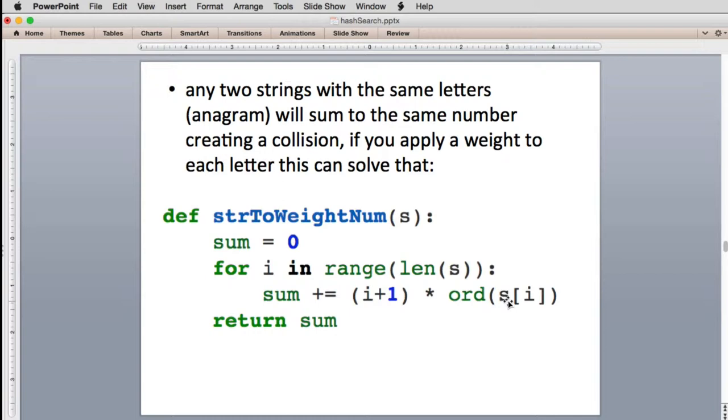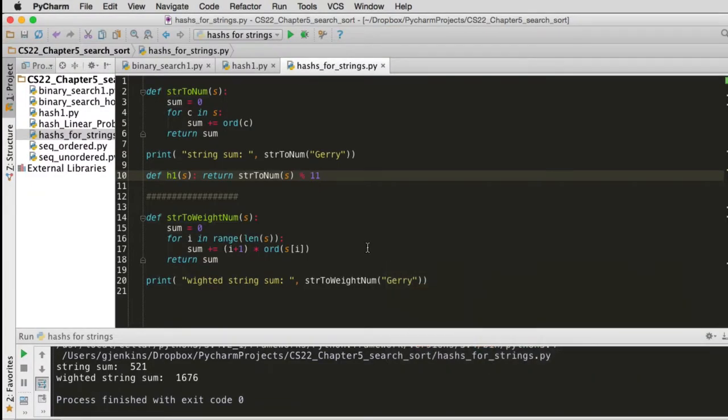So this i plus one is a weight that will multiply the ordinal so that the weight at the beginning of the string will have a different weight than the ending. So now if we have the same letters rearranged, we would actually get a different number. This is a little trick to solve that. I put this in this code as well. The second code is down here and it calls it to weight it. When I do the weighted string, I get a completely different number.